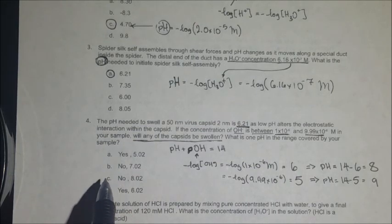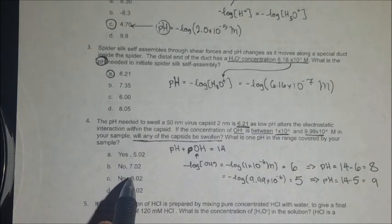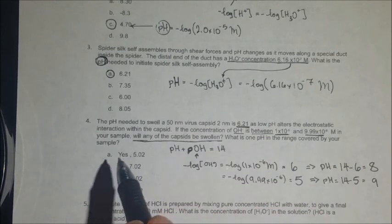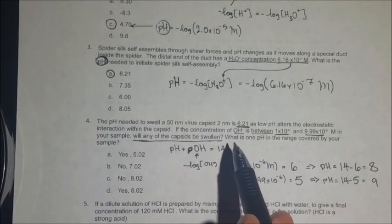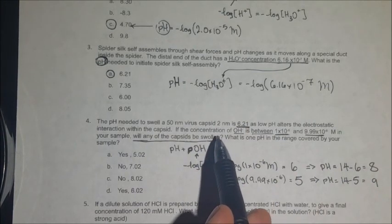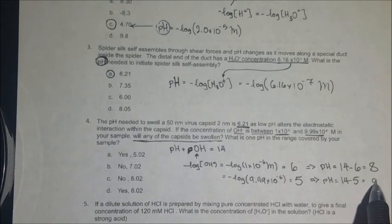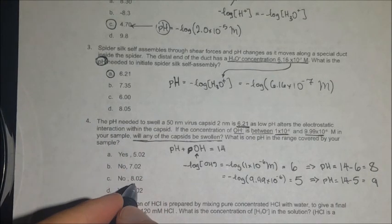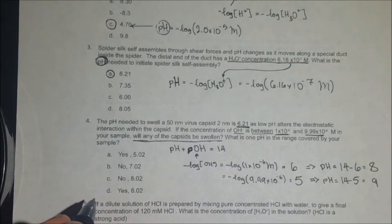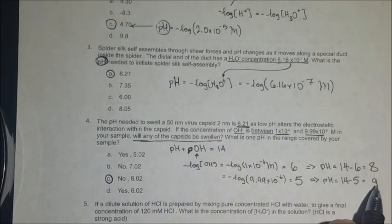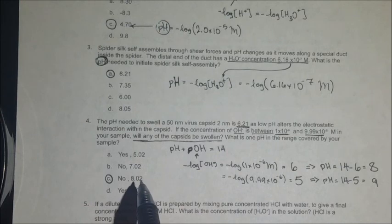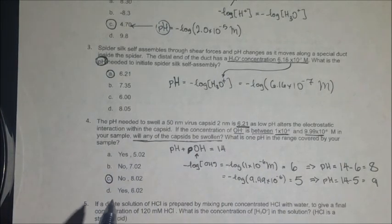The answer no eliminates choices A and D. Between B and C, both say no, so we need to identify a pH within our range of 8 to 9. The value 8.02 falls within that range while 7.02 does not. Therefore, C is the correct answer for number 4: the capsids will not swell because the pH is not low enough, and 8.02 is the only pH within the valid range.